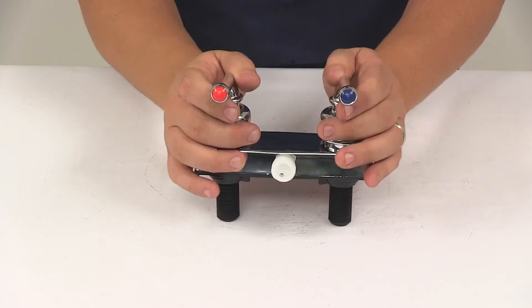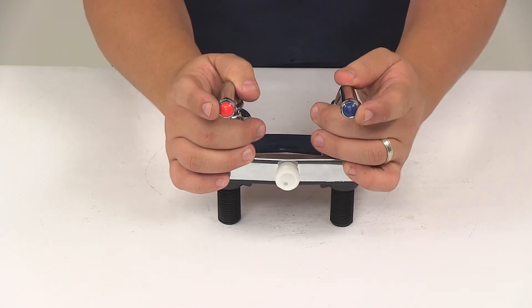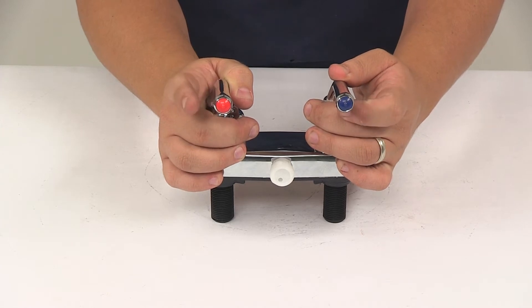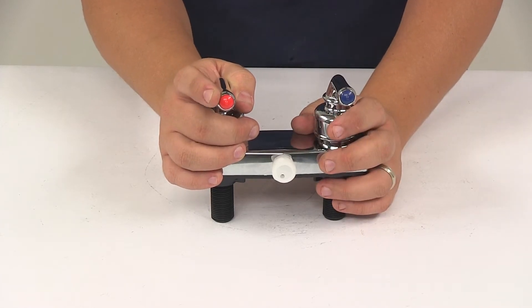You can see that the ends of the teacup lever handles are color-coded. Blue signifies cold, and red signifies hot.